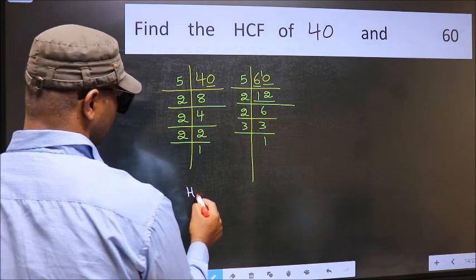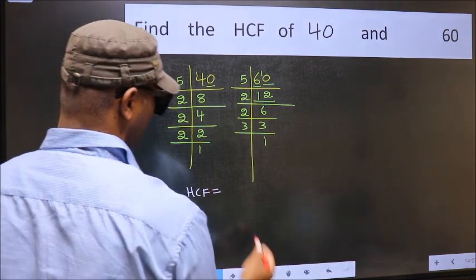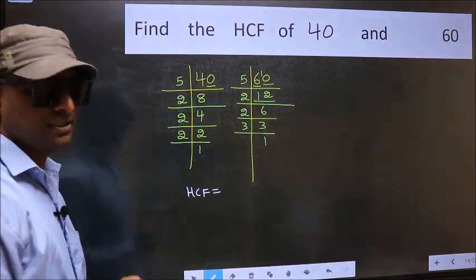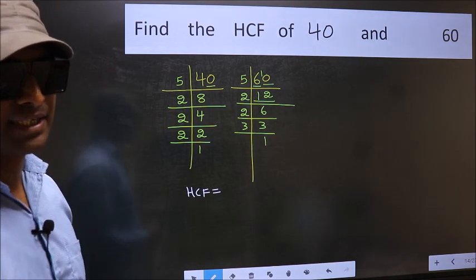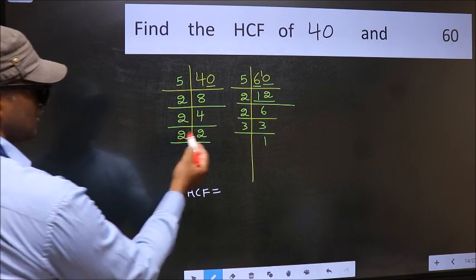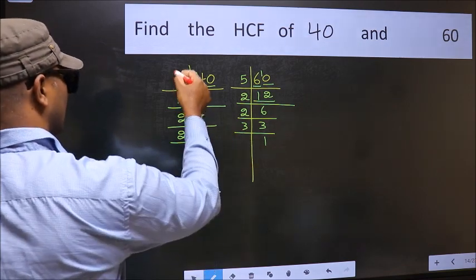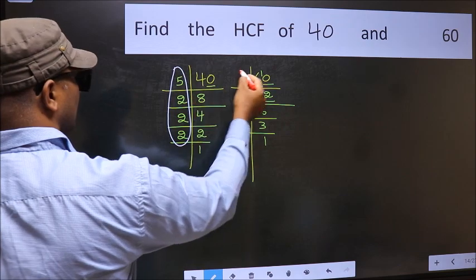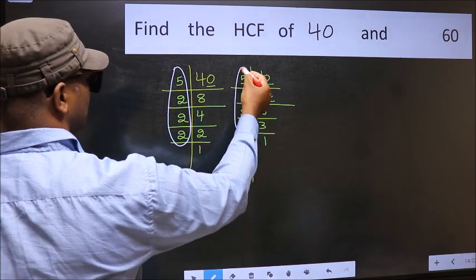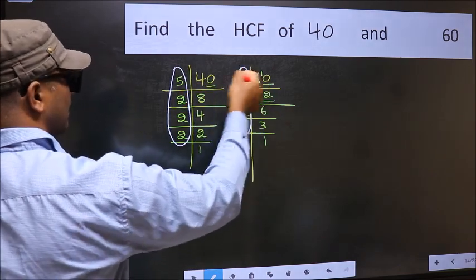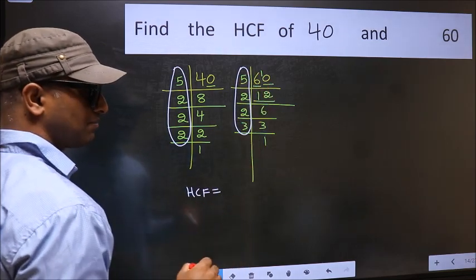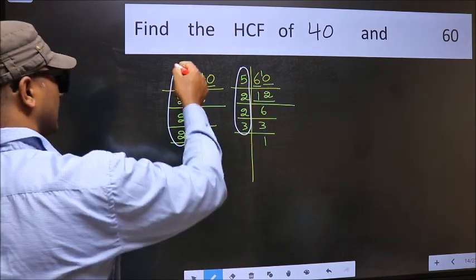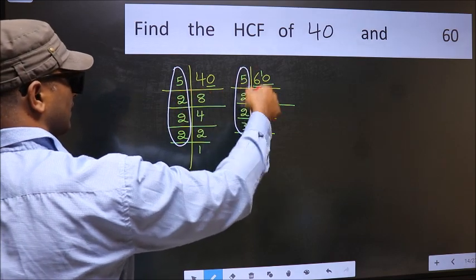Therefore, our HCF is the product of the numbers which should be present in these two places. That is here and also here. Here and here. So now let us find the numbers which should be present here and here.